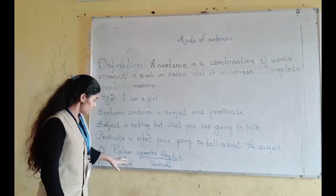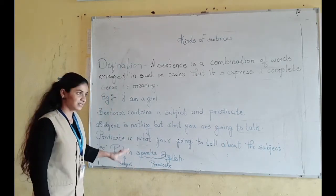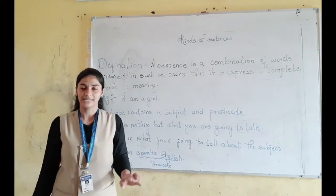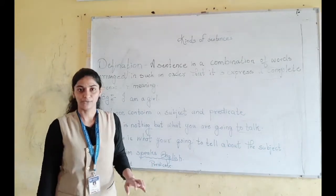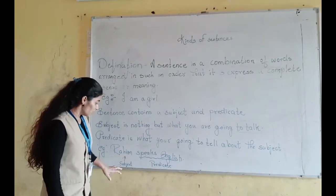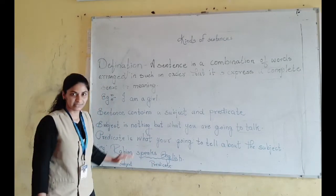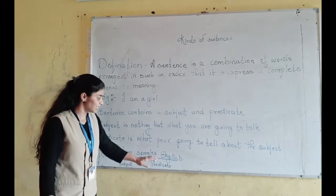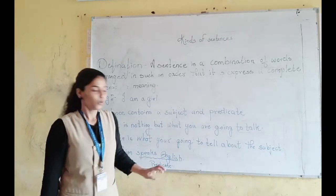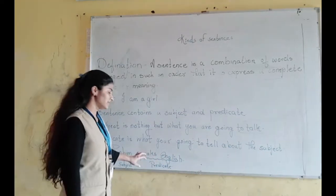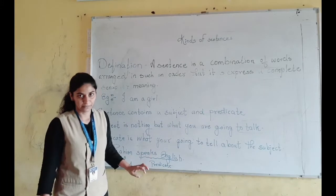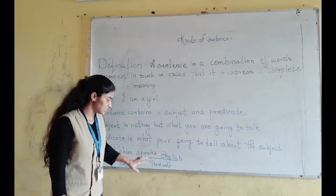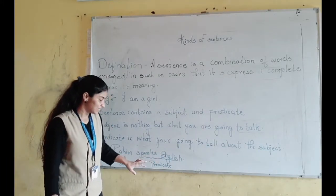Here, Rahim is the name of the boy as well as a proper noun. For us, Rahim is the subject and 'speaks English' is the predicate. Here, 'speaks' is the verb and 'speaks English' is the predicate.